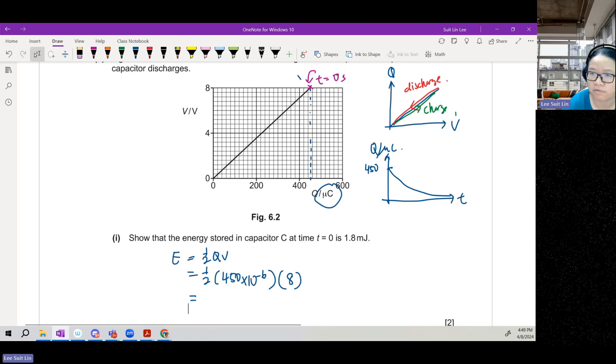So if I hook my calculator, I will get 1.8 times 10 to the power of negative 3 joules, which is 1.8 millijoules.